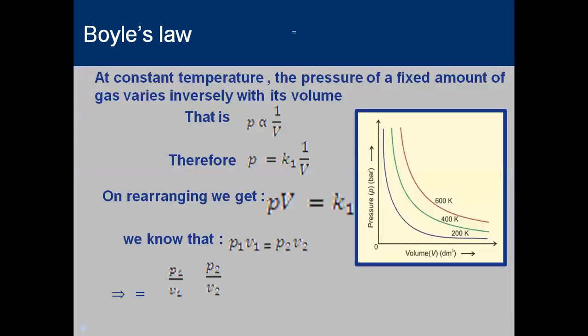Let's start with Boyle's Law. Boyle was a scientist who explained gases at constant temperature — he took temperature as a fixed constant, such as room temperature. At constant temperature, the pressure of a fixed amount of gas varies inversely with its volume. We can say pressure is inversely proportional to volume. As you can see in this graph, as we keep on increasing the pressure, the volume of the gas decreases.